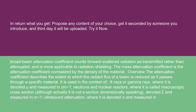The mass attenuation coefficient is the attenuation coefficient normalized by the density of the material. The attenuation coefficient describes the extent to which the radiant flux of a beam is reduced as it passes through a specific material. It is used in the context of x-rays or gamma rays, where it is denoted μ and measured in cm⁻¹; neutrons and nuclear reactors, where it is called macroscopic cross-section, denoted Σ and measured in m⁻¹.